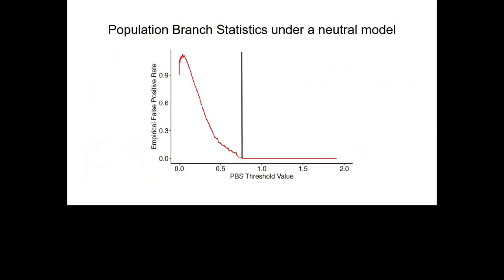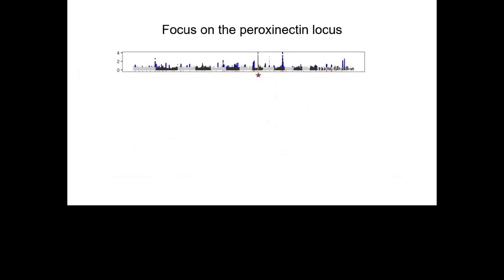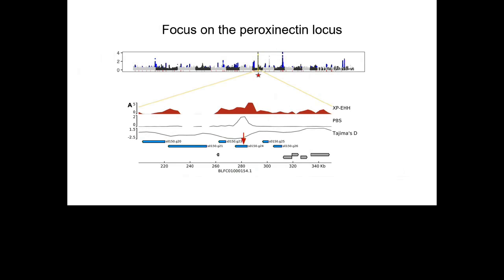So we can calculate an empirical false positive rate at any value and set it so it's acceptably low. Coming back to our Manhattan plot, we can now set that value and there are still plenty of interesting loci to examine for genes involved in adaptation. Zooming in on one of the strongest signals, we have additional statistics: the haplotype-based selection statistic XP-EHH, the population branch statistic, and Tajima's D — everything points toward a strong selective sweep on this gene. This is a peroxinectin gene, and differential expression studies in corals have shown these genes are differentially expressed under heat stress. So we think this is a pretty interesting locus for adaptation to hot Kimberley conditions.